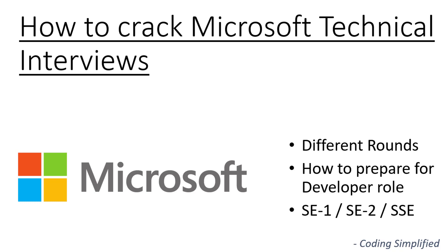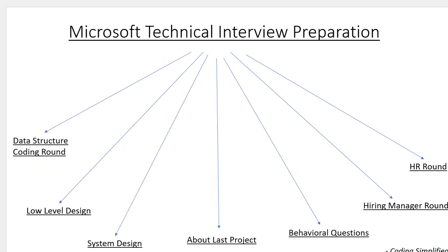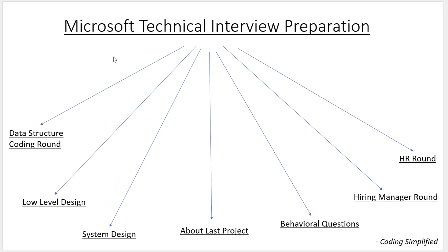Generally in Microsoft, the positions are software engineer 1, software engineer 2, senior software engineer, and then further positions as you go higher. Let's see what we have to prepare for Microsoft.